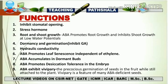The third function is in root and shoot growth. ABA promotes root growth and inhibits shoot growth whenever there is low water potential. ABA has different effects on the growth of root and shoot, and these effects are strongly dependent on the water status of the plant.